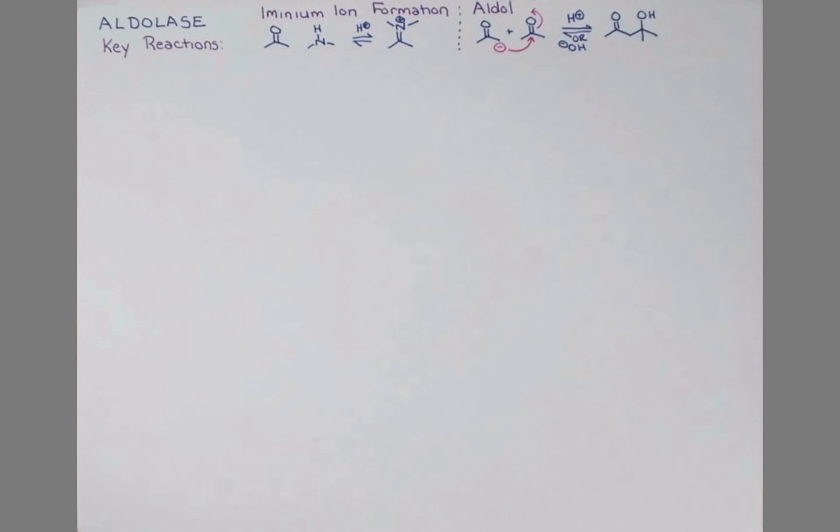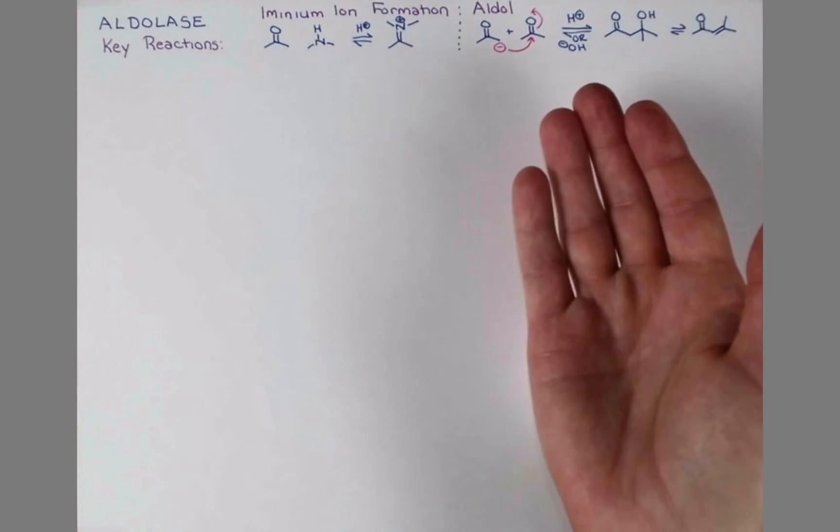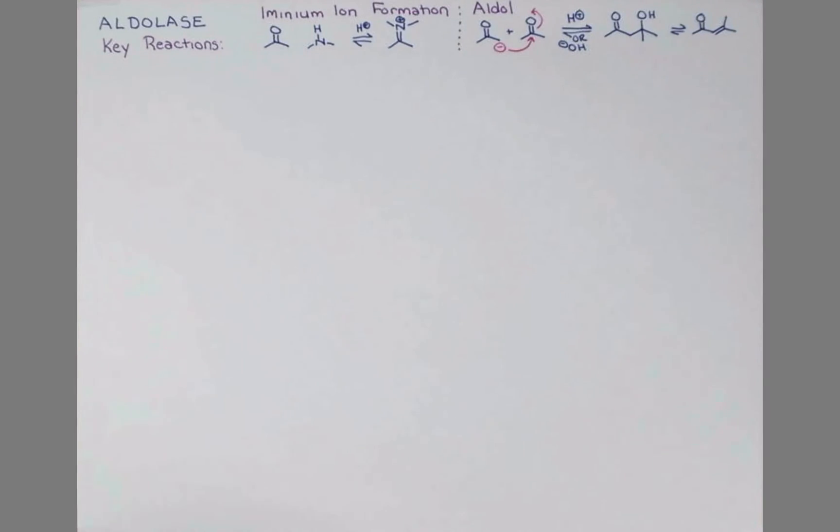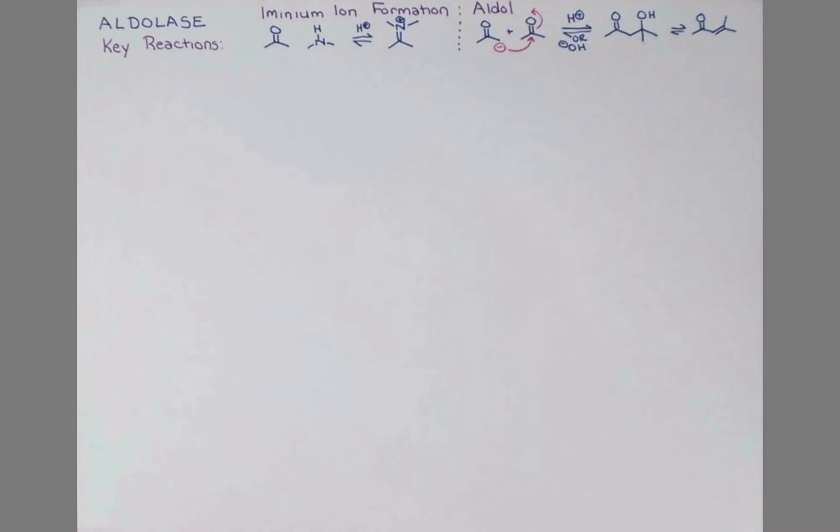These often eliminate spontaneously or with a little bit of warming of the solution to give enones. This reaction is reversible, and there is a reverse of this reaction that will actually go in this direction, cleaving the bond right here, and that's called the retroaldol.